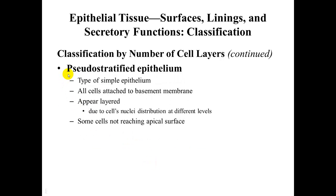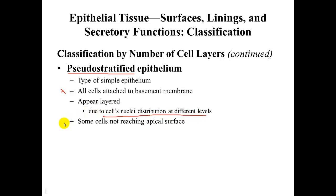The third general type is pseudostratified epithelial. The prefix pseudo means false, so this is falsely stratified. All cells do attach to the basement membrane, meaning there is only one layer; however, it appears as if there are more than one layer — generally two — because of how the cell nuclei are distributed at different levels. Additionally, not all cells reach the apical surface, giving it that false stratification appearance.